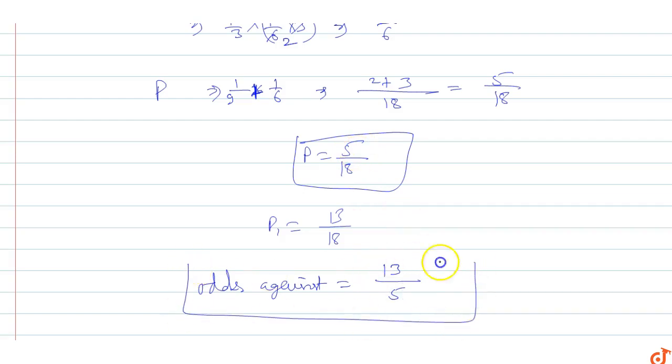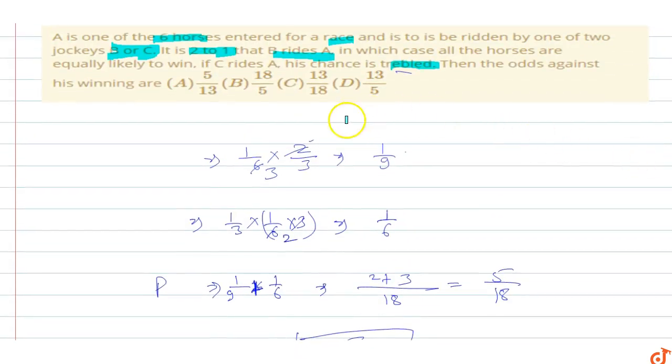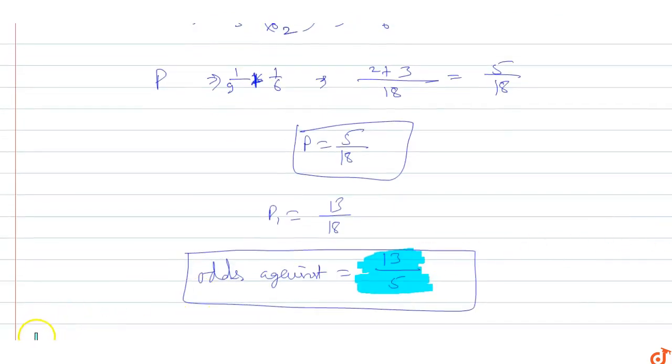So odds against winning is 13 by 5. Which option will be the correct option? Option D will be the correct option, 13 by 5. Odds against his winning are 13 by 5. This is the answer for this question.